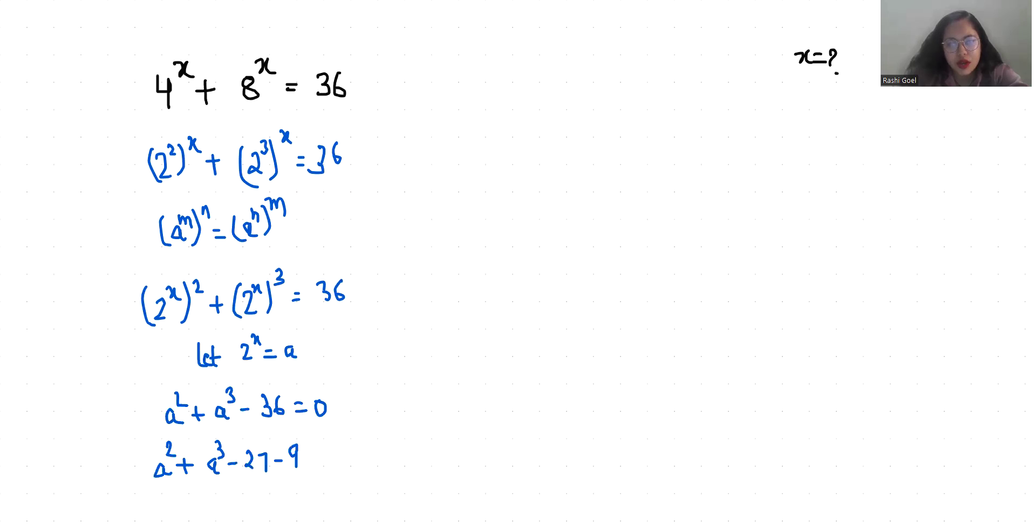So a square minus 9 as 3 square, and 27 as 3 cube, which equals 0.